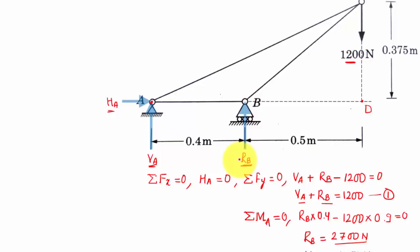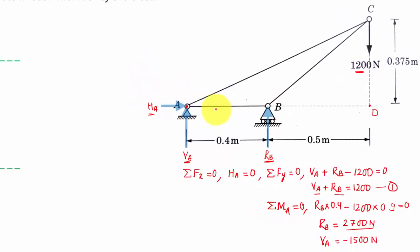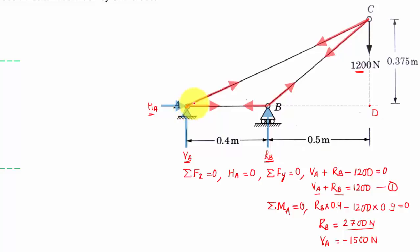Now let's determine the forces in all members. There are three members: AC, AB, and BC. We'll find the axial forces along these members. Right now I'm assuming all of them are in tension. So the forces are diverging from each joint — directed outwards. The names of these forces are FAC, FAB, and FBC.